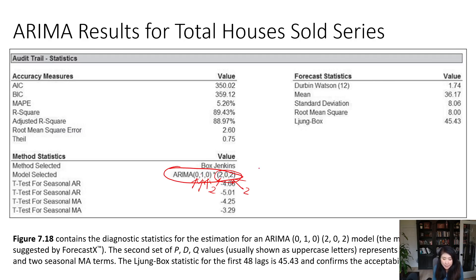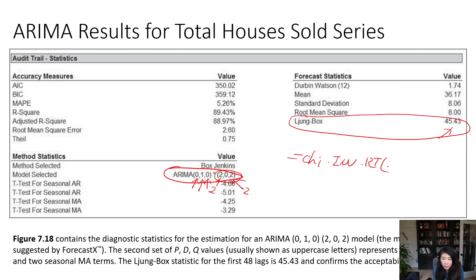If you want to do hypothesis testing, we use the Ljung-Box test. The Q statistic is 45.43. To do this test, you need to find the critical value using the chi-squared inverse right-tail distribution at a significance level of 0.01. The degree of freedom is M minus P minus Q. By default, ForecastX creates statistics where if there is no seasonality, M equals 12. However, since we do have seasonality, M equals 4 times 12, which equals 48.